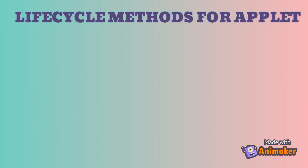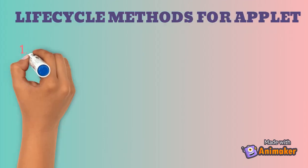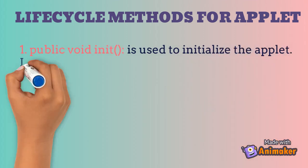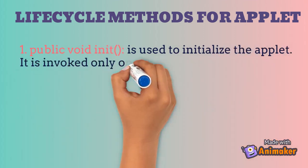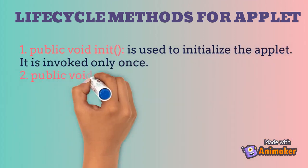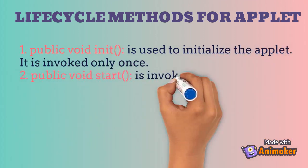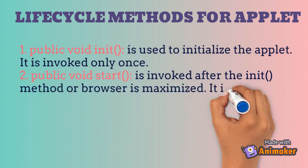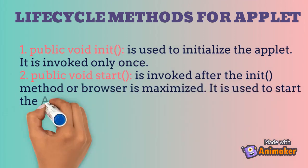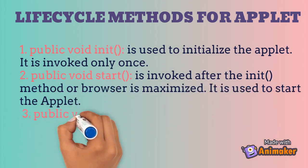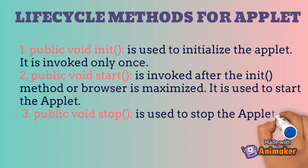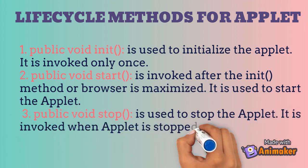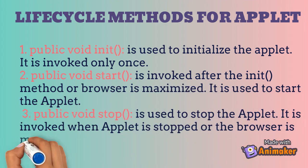You will learn about the methods of an Applet. First one is the init method. If you need to initialize the Applet, it is called only once. The second one is Start method. If you need to start the Applet, it is called after the init method. The third one is Stop method, which is used to stop the Applet.